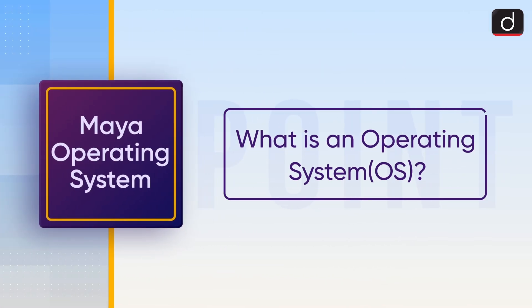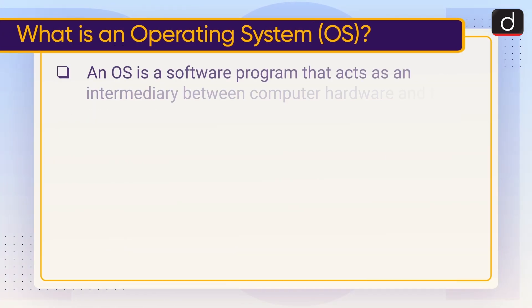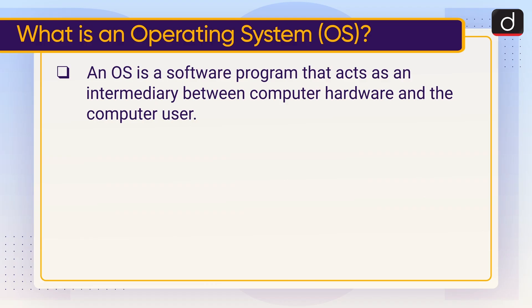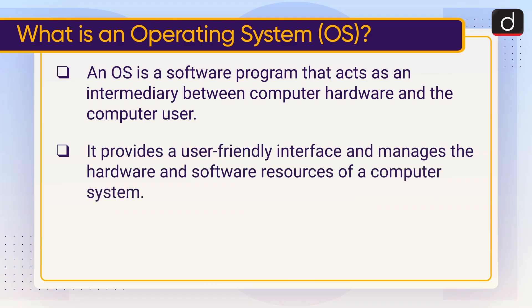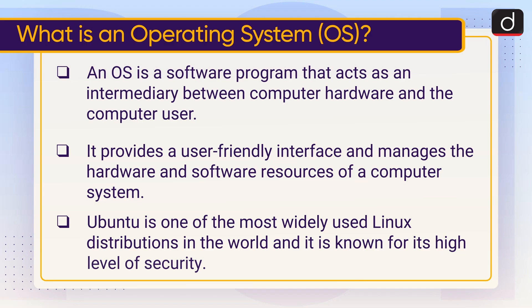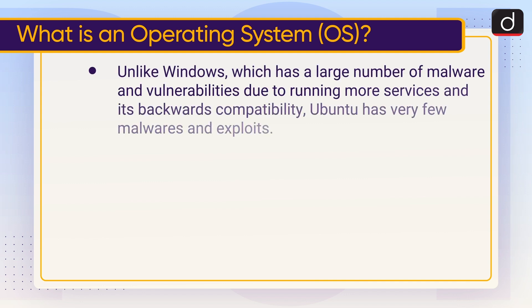Now let's understand what is an operating system. An OS is a software program that acts as an intermediary between computer hardware and the computer user. It provides a user-friendly interface and manages the hardware and software resources of a computer system. Ubuntu is one of the most widely used Linux distributions in the world, known for its high level of security. Unlike Windows, which has a large number of malware and vulnerabilities due to running more services and its backwards compatibility, Ubuntu has very few malwares and exploits.